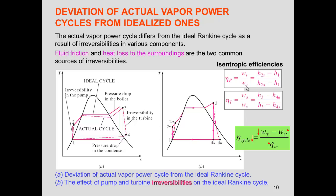For the pump, isentropic efficiency is defined as the ratio of isentropic work to actual work, while for the turbine it is actual work divided by isentropic work. As a result, the isentropic efficiency causes the pump work to rise, while for the turbine it gives us less work output. Combined with the need for more heat due to pressure drops, all of these effects reduce the overall efficiency of the cycle.